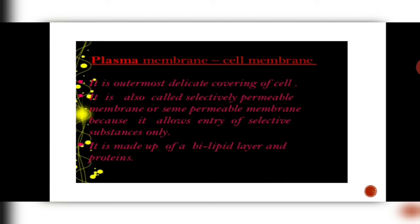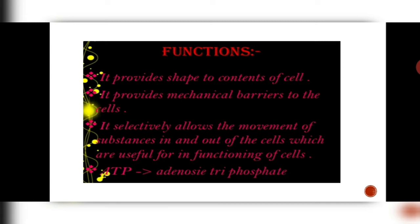What does the term semi-permeable mean? It means it allows only certain selective materials to enter and exit the cell. Also, this plasma membrane is made up of lipid bilayer and proteins. What are the functions? It keeps all the contents in a particular shape — the shape of the cell is because of the plasma membrane. It provides a mechanical barrier, preventing pathogens from outside. Also, it selectively allows the movement of substances.